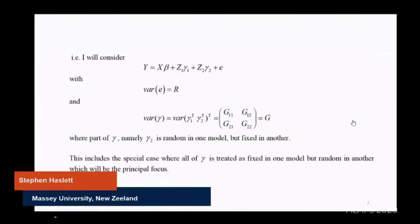I'll be looking at this model here: Y equals X beta plus Z1 gamma1 plus Z2 gamma2 plus e, with variance of e equal to R and variance of gamma equal to this block structure equal to G. That's the case where gamma2 is random in one model and fixed in another, but actually what I'm going to focus on is all of gamma being treated as fixed.